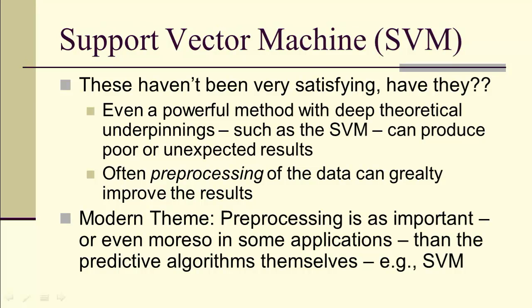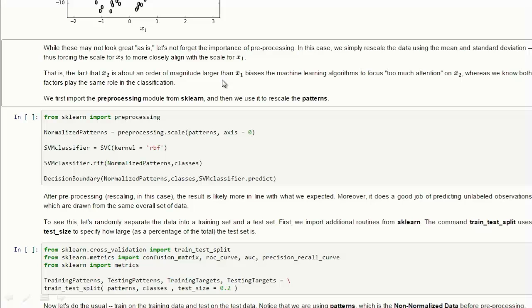Preprocessing is as important, or even more so in some applications, than the actual algorithms you use. We're going to look at that. We're going to go back to the notebook, and we're going to notice that the X1s go from negative 2 to 3 or so, but the X2s are an order of magnitude larger. So, we're going to preprocessing by simply rescaling the X2 so that it more closely aligns with the X1.